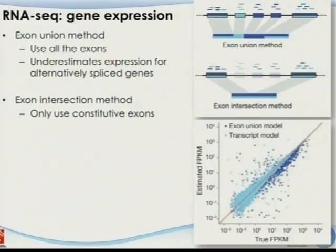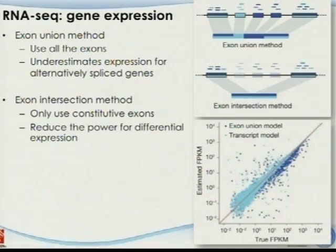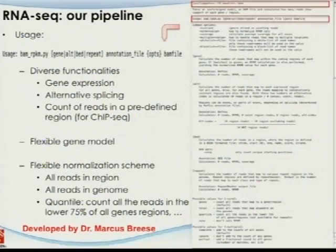For the exon intersection method — only using constitutive exons and discarding alternative-spliced ones — the problem is that it also reduces the power to identify differential expression, because you're discarding a lot of information that may be useful. You're supposed to have deeper measurement, but you don't get it because you remove those alternatively spliced exons.